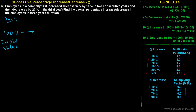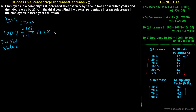As given in the problem, the number of employees increased by 10 percent in the first year. For a 10 percent increase, the suitable multiplying factor is 1.1. So after 10 percent increase, the value becomes 100X multiplied by 1.1, which equals 110X.